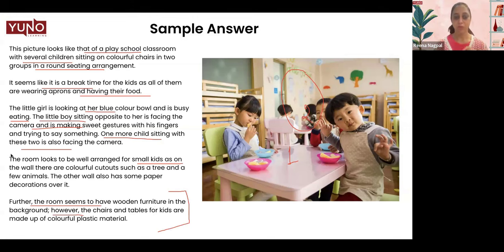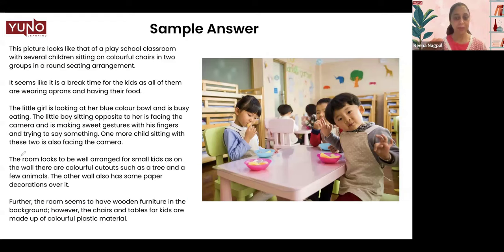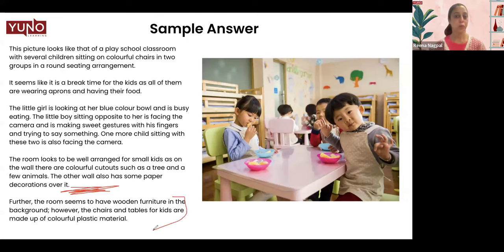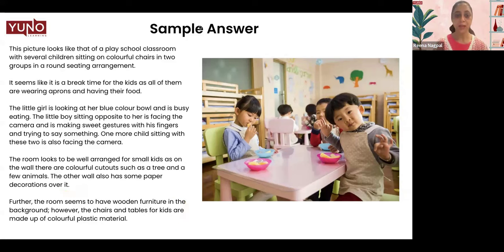When you practice reading this sample answer, maintain a consistent tempo and try to finish within 87 to 88 seconds. The final sentence about plastic furniture is extra content for fast speakers — include it only if you still have four to five seconds remaining after covering all other details. Remember to use connectors, take proper pauses, and modulate your voice.